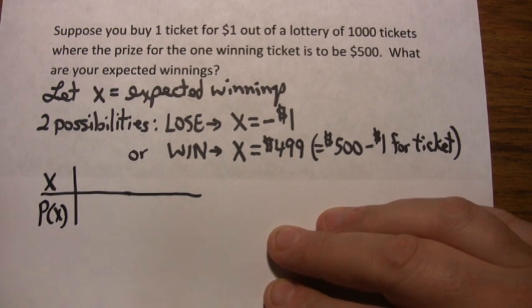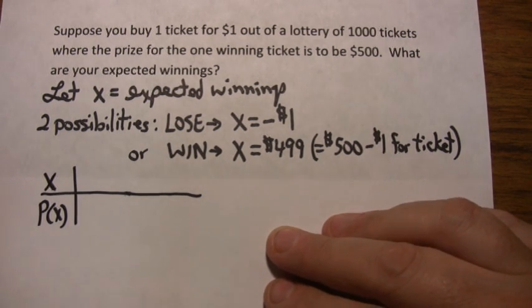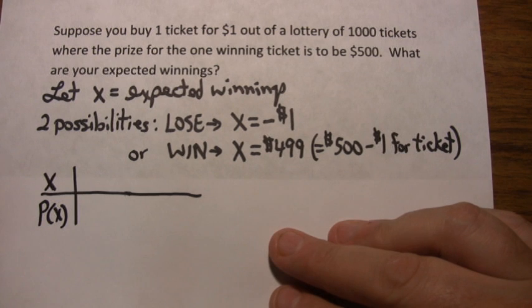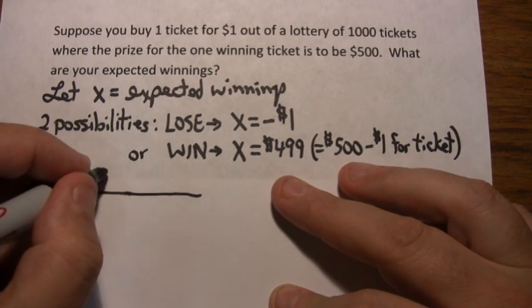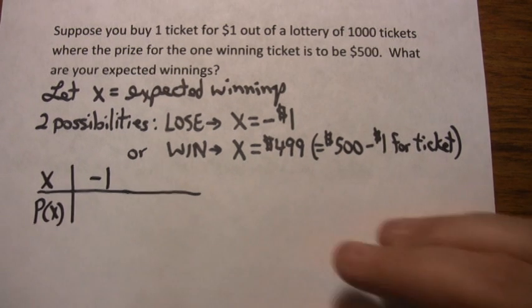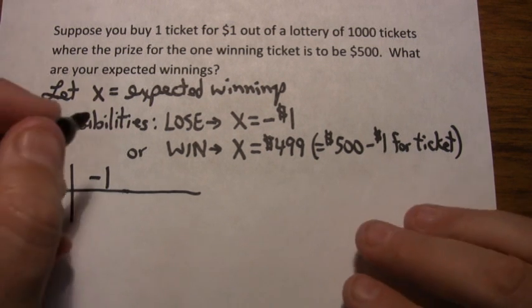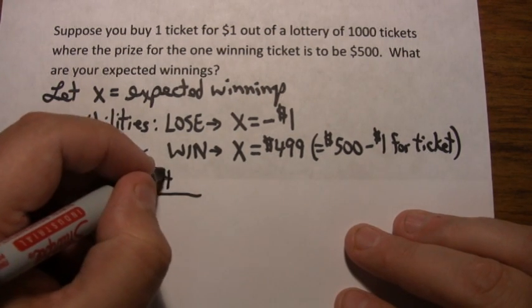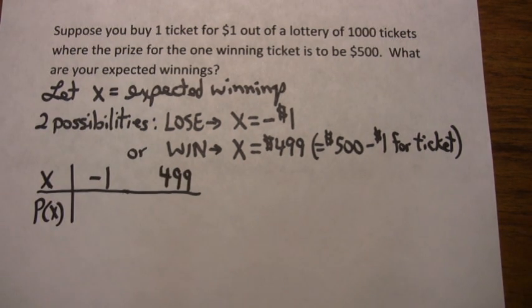Like I said, there are only two possible ways that this can turn out. You're either going to win or lose. Let's do the loss first since I wrote it first earlier. So X could either be negative 1, that means you lost the dollar, or X is equal to $499. You won $500, subtract out the dollar you had to pay for the ticket.